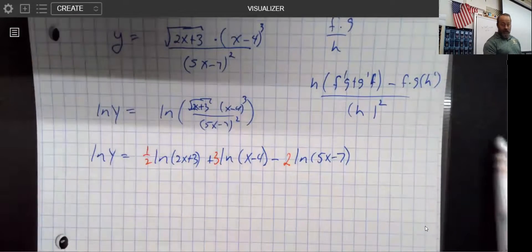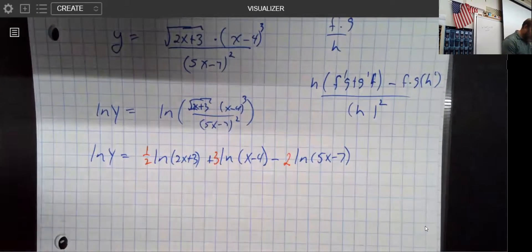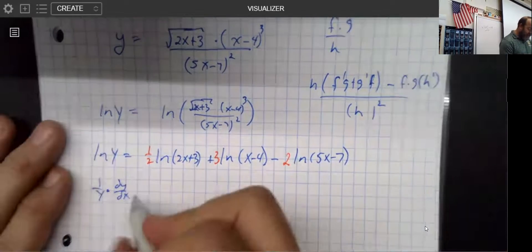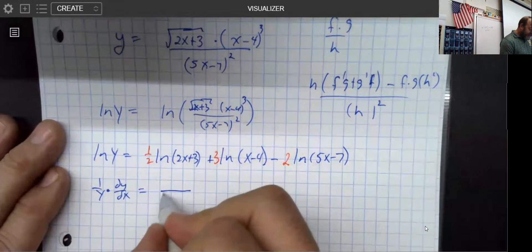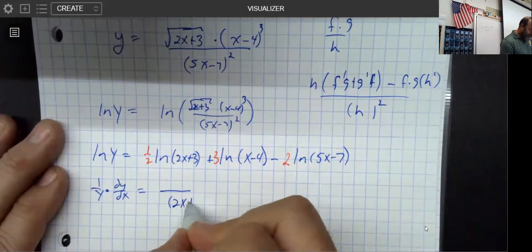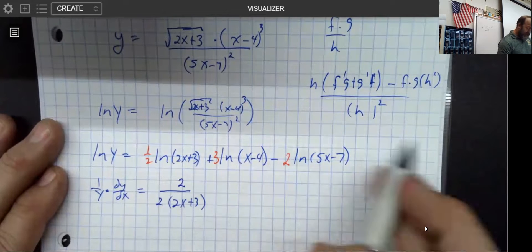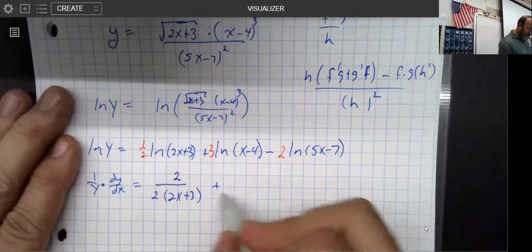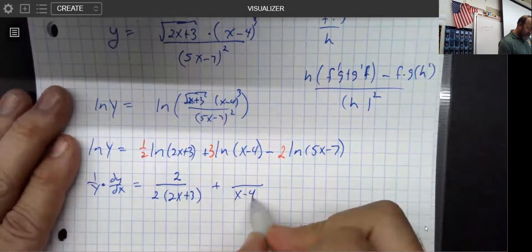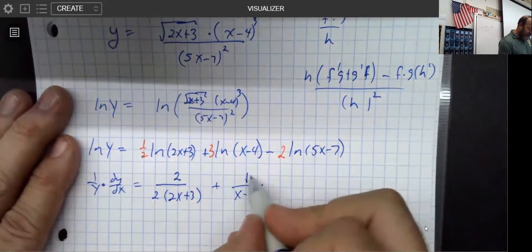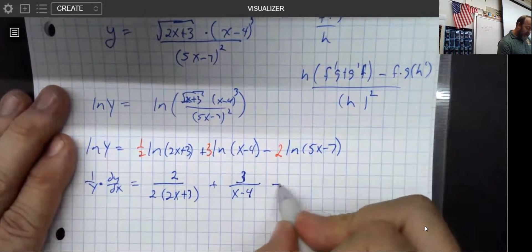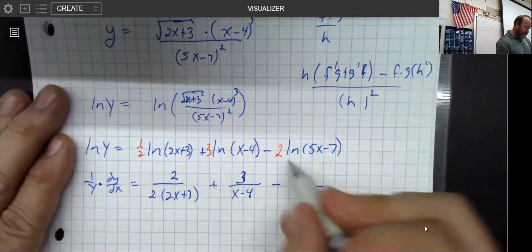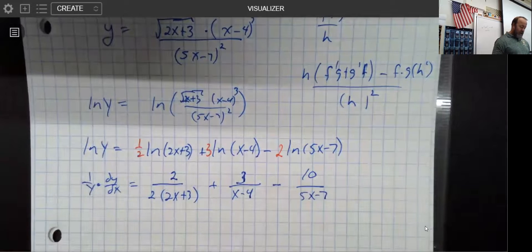Now again, we have not actually done any calculus yet, but now it's time to do some. So we have 1 over y times dy dx, because that's the derivative of any log. This one is 1 over what's inside times the derivative of what's inside. Now this 2 right here is from the 1 half. This 2 is from the chain rule. Then I have 1 over what's inside times the derivative of what's inside, but I still have the 3 that's in front. And then over here, I have 1 over what's inside times the derivative of what's inside, which would be 5. So I'm going to pick a 10, because I had 2 of those 5s.